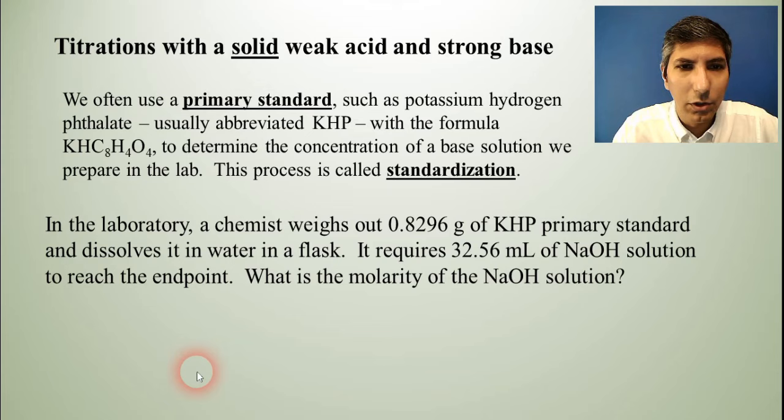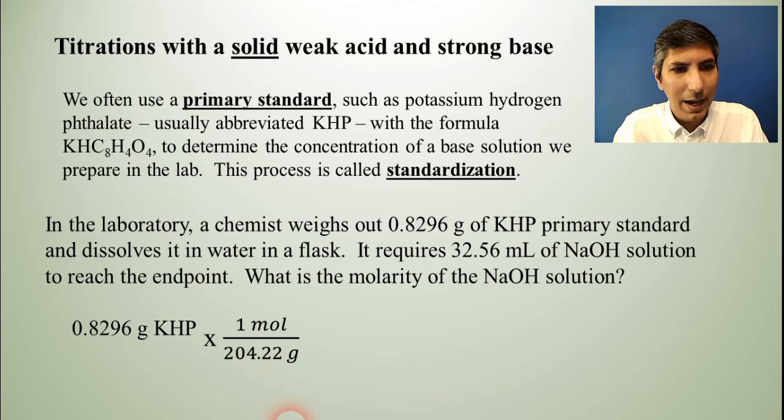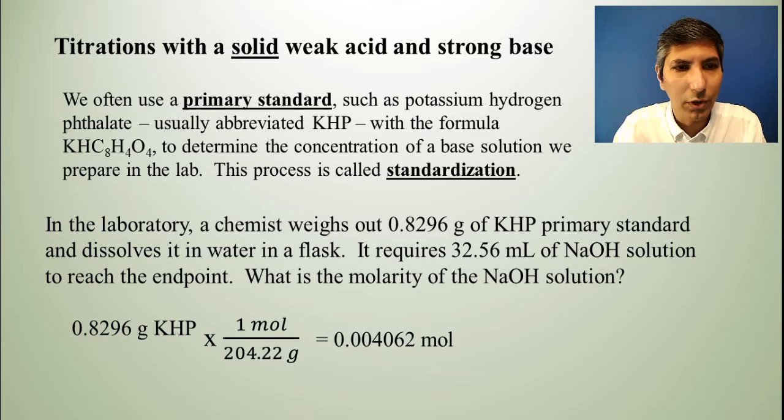Well, the first thing we have to do is take this KHP amount and convert it to moles. So 0.8296 grams of KHP. We convert it to moles. One mole on top and 204.22 grams in a mole on bottom. And don't forget that the formula is KHC8H4O4. So that's quite a bit to add up. But we just add that up and there's our molar mass. And when you divide this out, you find that it's 0.004062 moles of the acid.